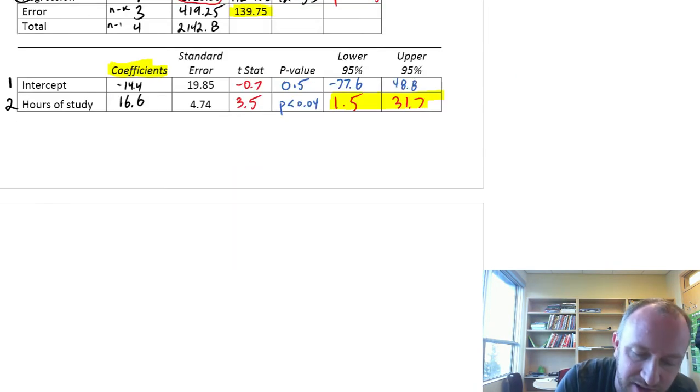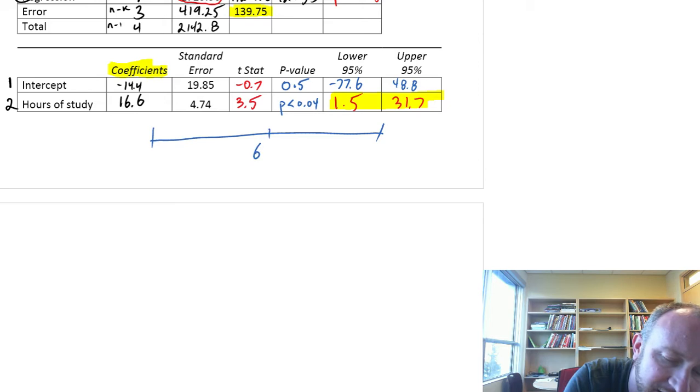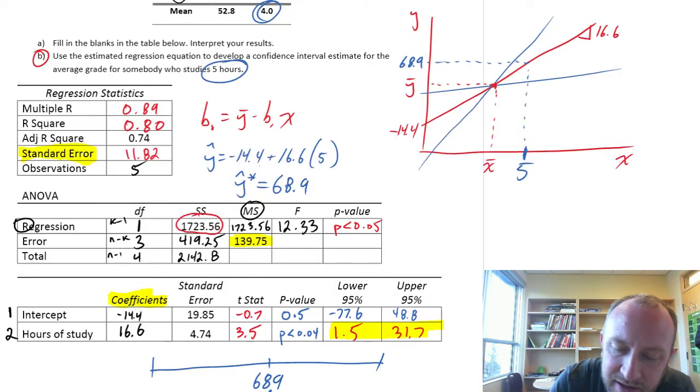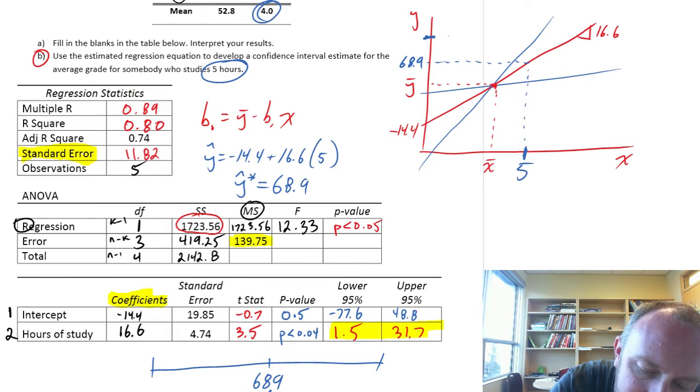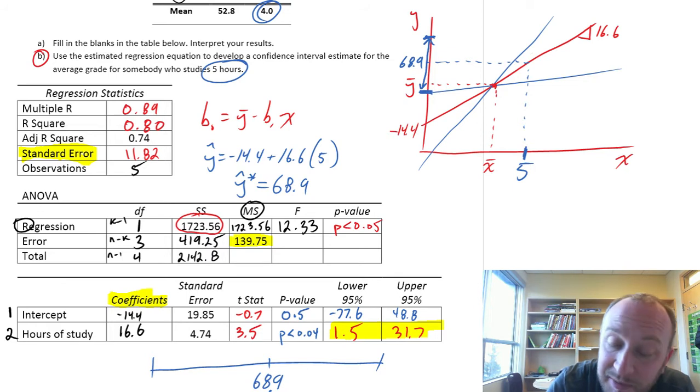So here, I'm just going to scroll down a little bit. So again, here's that point estimate, 68.9. We want to calculate what is the upper and lower limit to that point estimate.